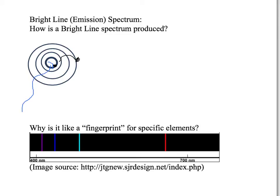Now, once it's up to the fourth energy level, it's going to be in an excited state — an unstable state — so it's going to want to go back down to a lower energy level. In this case, we'll bring that electron back down to the second energy level, and when you bring an electron to a lower energy level, you release energy in the form of light.